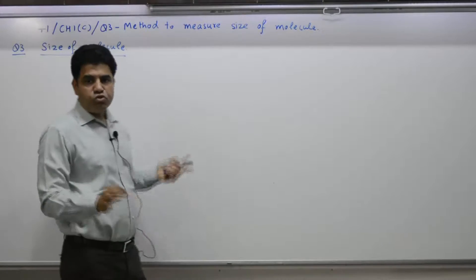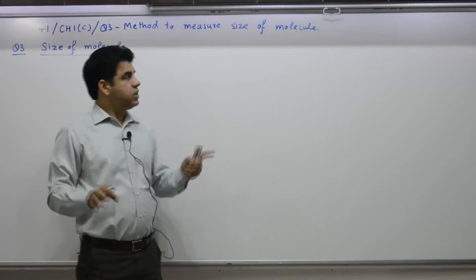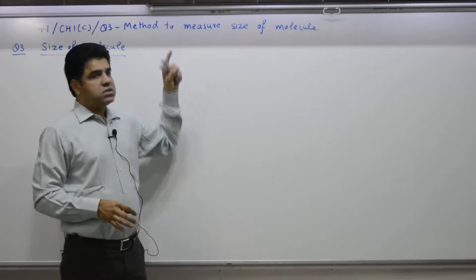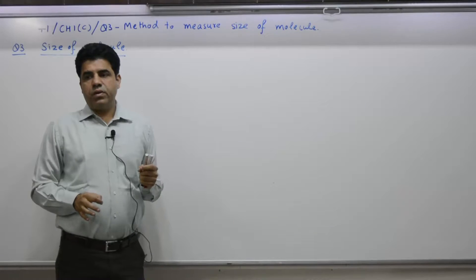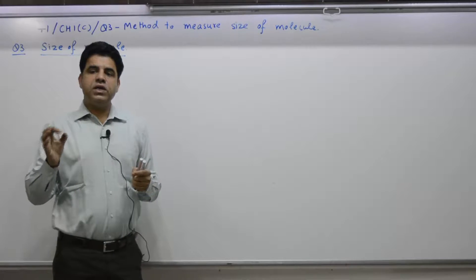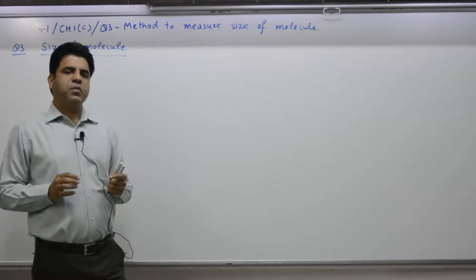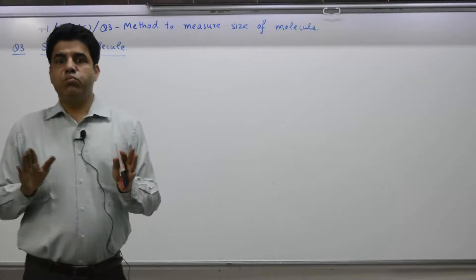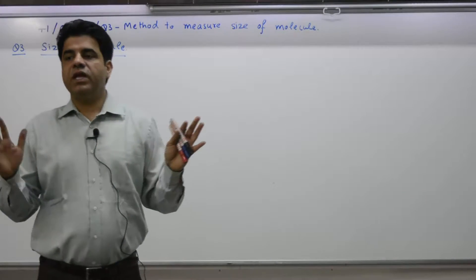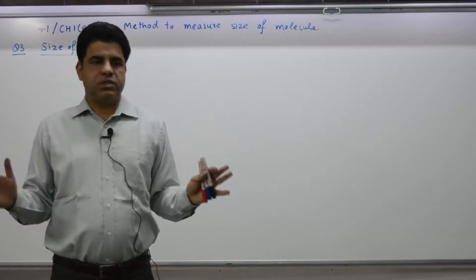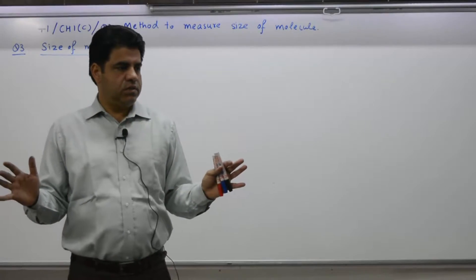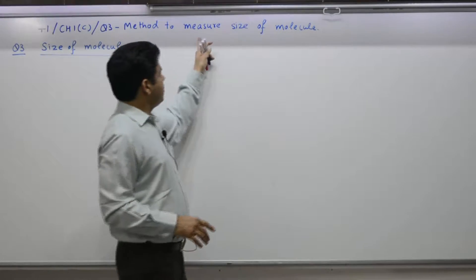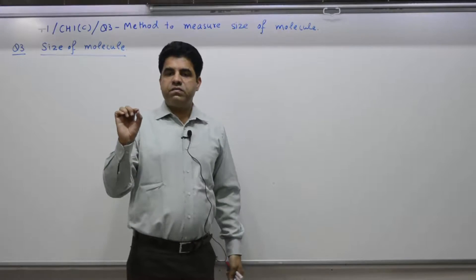Chapter 1c, question number 3 deals with the method to measure the size of a molecule. Question number 2 dealt with the measurement of size of the moon — a very heavy object. Now we measure the size of a molecule. In physics, you can find out the size of very big objects like the moon and very small objects like a molecule.